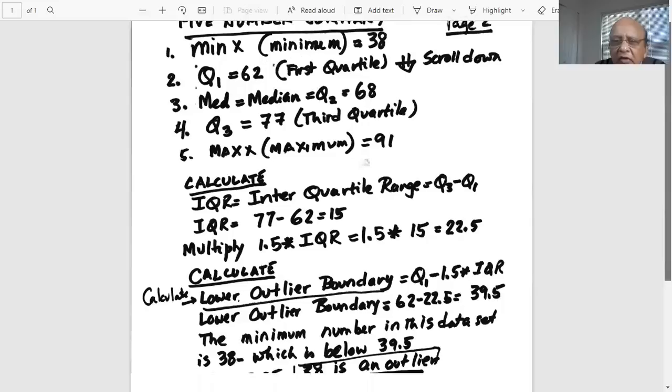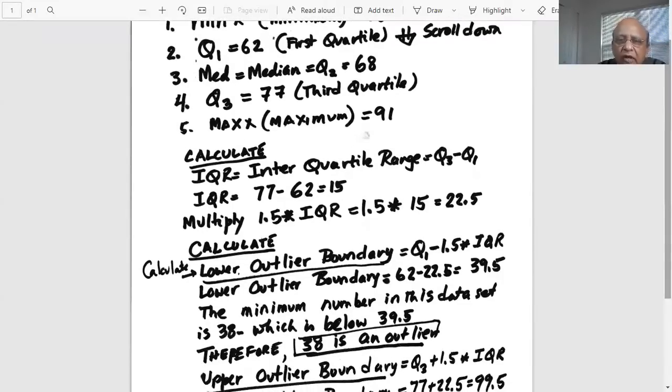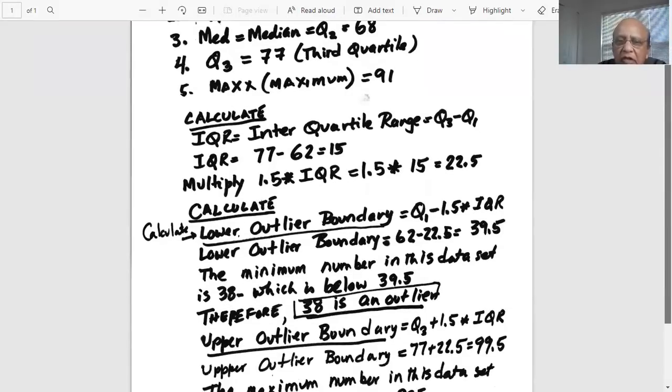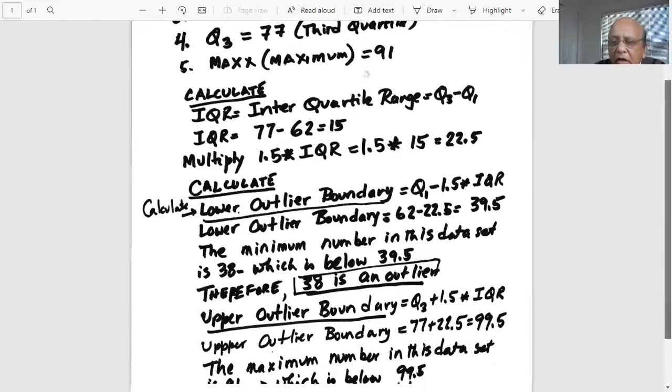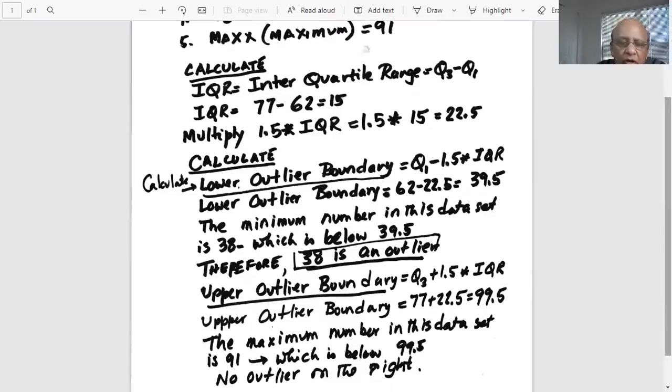Now we want to find out if there is any outlier in the data set. For that we need to find the IQR, which is the interquartile range, Q3 minus Q1. In our case it is 77 minus 62 is 15. Now multiply 1.5 times the IQR, or 1.5 times 15 is 22.5. Now we need to calculate the lower outlier boundary, which is Q1 minus 1.5 times IQR, or 62 minus 22.5.